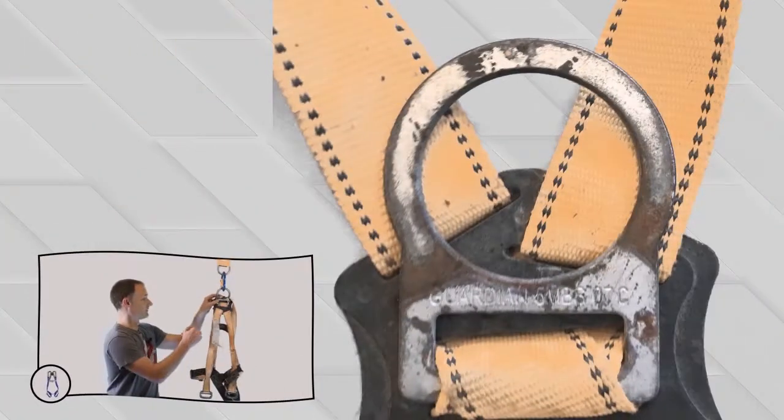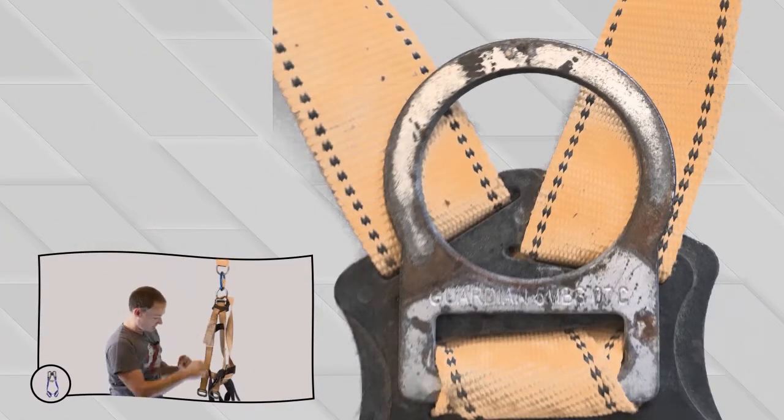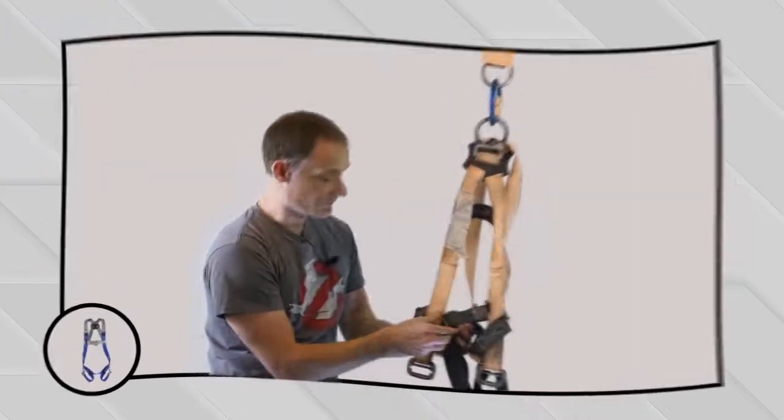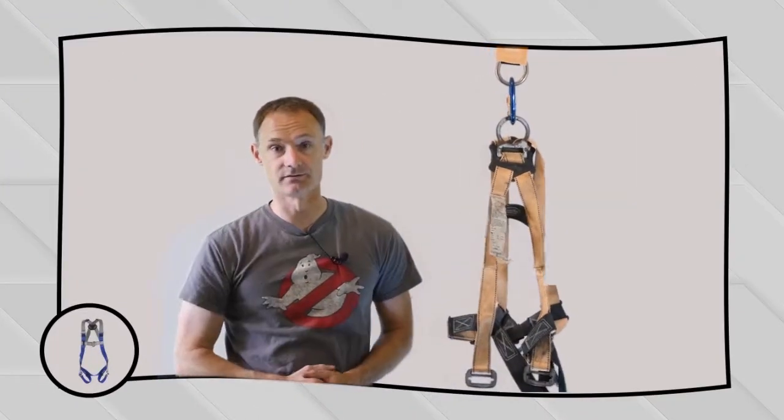And in this example, there's tons of rust right here on the side of the D-rings, buckles are all rusted. Some very, very heavily rusted. I mean, if you find rust, that's it, you've got to get it out of service.